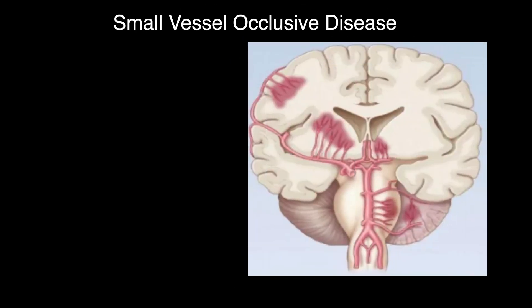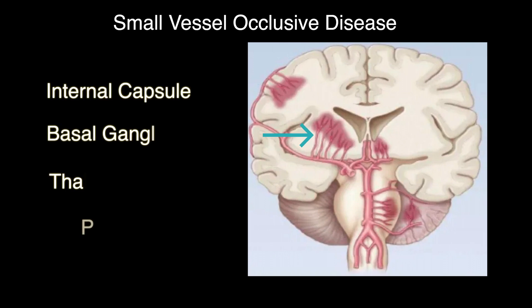When we're talking about small vessel occlusive disease, we need to identify which vessel we're talking about. In the brain, the territories that are at risk of small vessel disease are the internal capsule, basal ganglia, thalamus, and pons.